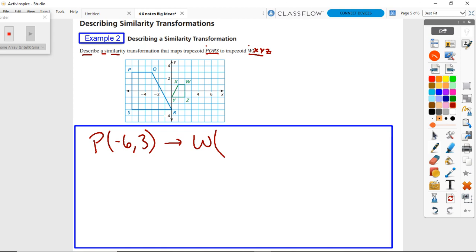We got to take that to W, which is at two, one. So how could we potentially get from negative six, three to two, one? Well, you can see if we reflect this thing over the Y axis, if we do a Y axis flip.